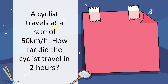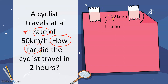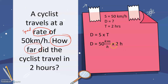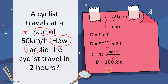Another example: a cyclist travels at a rate of 50 kilometers per hour — rate also means speed. How far did the cyclist travel in 2 hours? We are asked for 'how far,' so we are looking for distance. Using our triangular figure, distance equals speed times time. So we have 50 kilometers per hour times 2 hours. Multiplying gives us 100, and canceling out the hours unit, we get 100 kilometers. The cyclist traveled a distance of 100 kilometers in 2 hours.